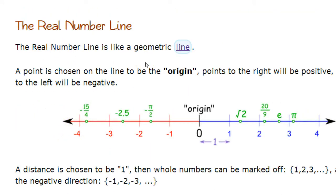All right, now the number line. It's like a geometric line. There's an origin which is zero and it goes off forever in both the right and the left directions.